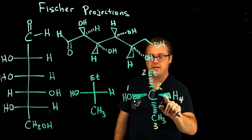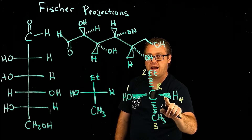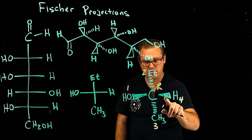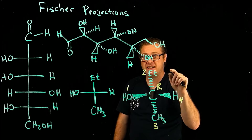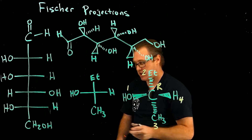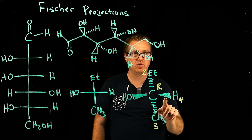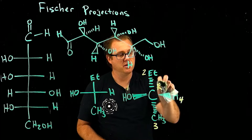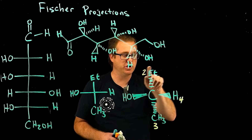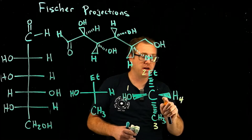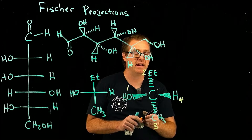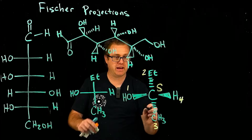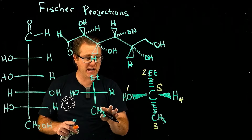But wait — priority four is the lowest priority, and it is a wedge. We've always said the lowest priority has to be facing in the back — it has to be a dash. When we see the lowest priority as a wedge, the trick is to just take the opposite of what we calculated. So one, two, three clockwise gives R, but since the lowest priority is a wedge, we take the opposite: it's S.